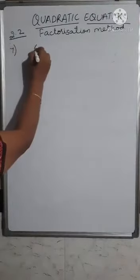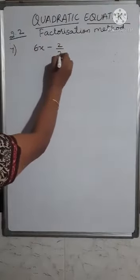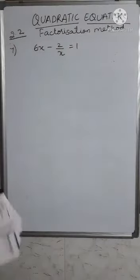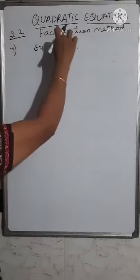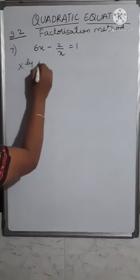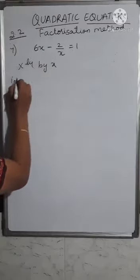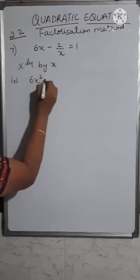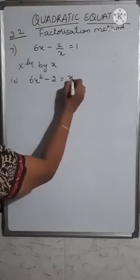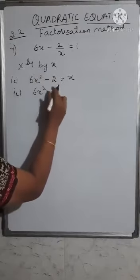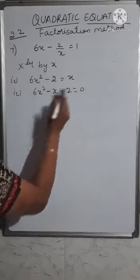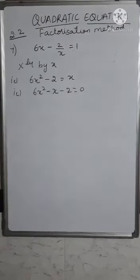7th problem: 6x - 2/x = 1. This is not in standard form, so multiply throughout by x to get 6x² - 2 = x. Rearranging gives 6x² - x - 2 = 0, which is now in the standard form of a quadratic equation.